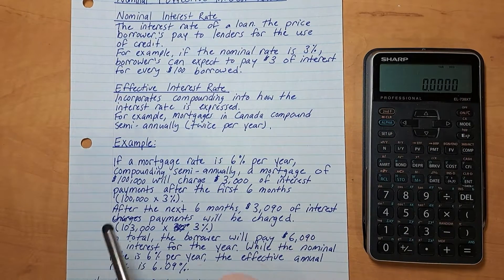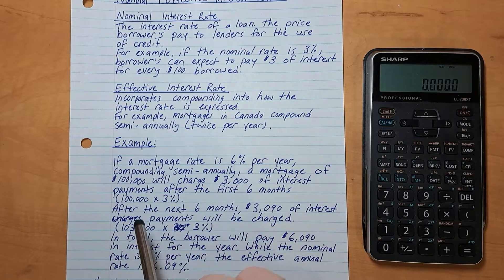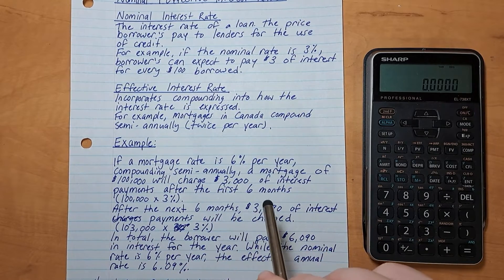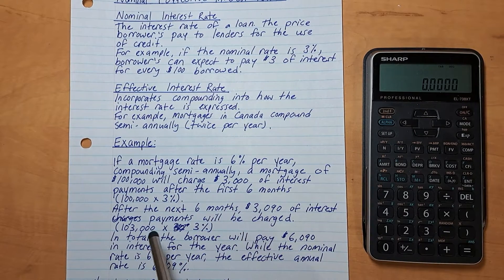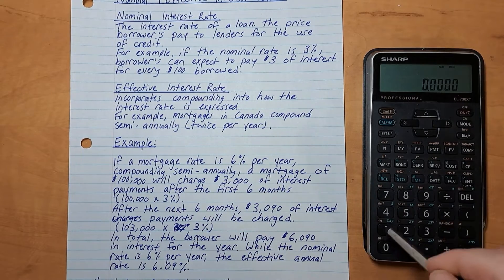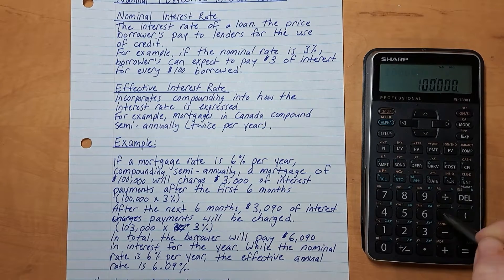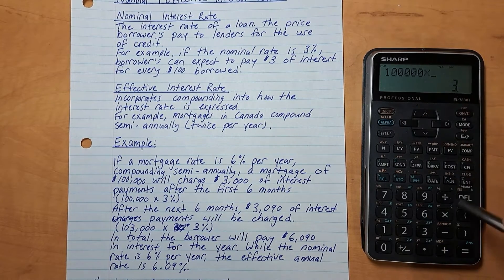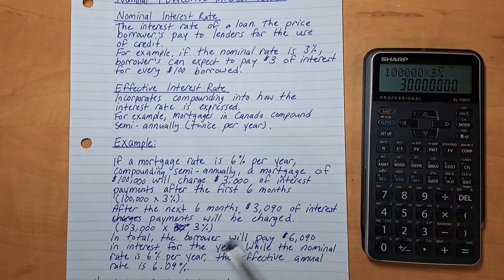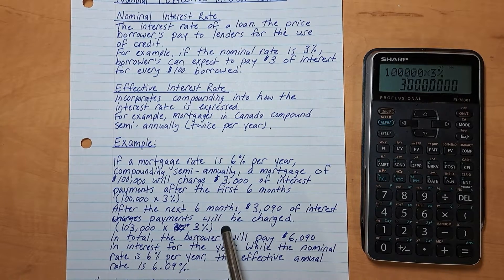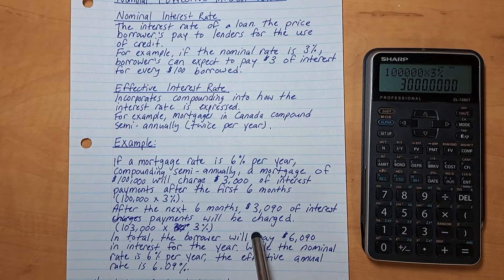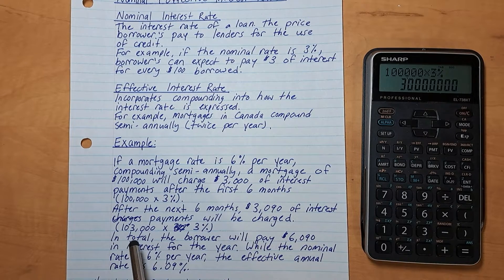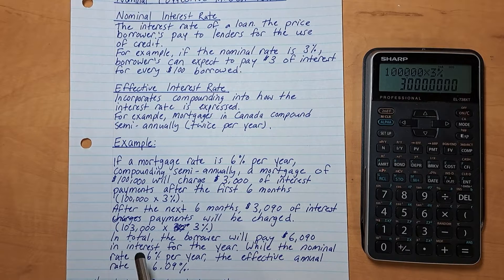If a mortgage rate is 6% per year, compounding semi-annually, a mortgage of $100,000 will charge $3,000 of interest payments after the first six months. That's 100,000 times 3% equals $3,000. Over the next six months, $3,090 of interest payments will be charged because the interest is being charged on the $103,000 amount.